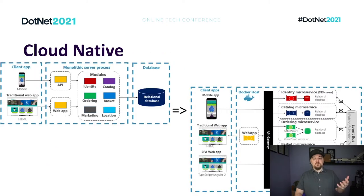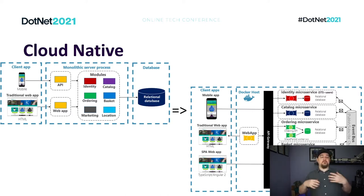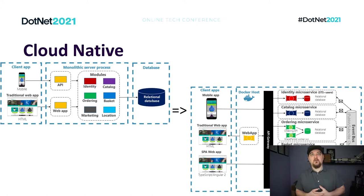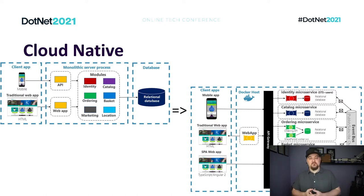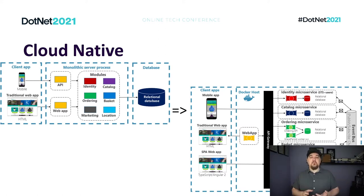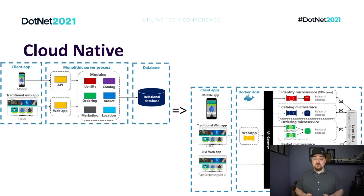Which brings me to the topic of this talk. Today we're going to talk about cloud-native in two parts. The first part: what is cloud-native, why do I care, why isn't this just a big hype term that doesn't mean anything? Then I want to talk about the stuff happening in .NET 6 that might impact you building a cloud-native application.